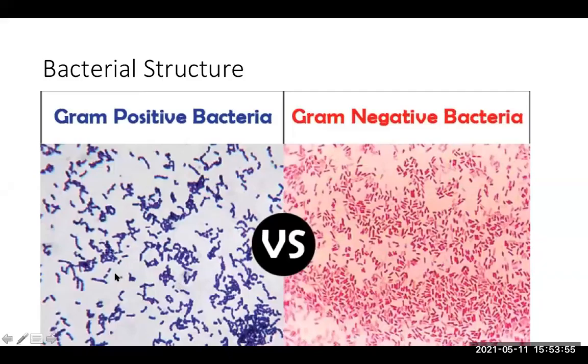The way you identify what it is, is by doing a gram stain in the lab. Gram positive bacterial cells stain purple when you do the gram stain procedure. Gram negative bacteria stain pink. E. coli is gram negative; Staphylococcus aureus is gram positive, same with Streptococcus pneumoniae. Those are the two main categories.